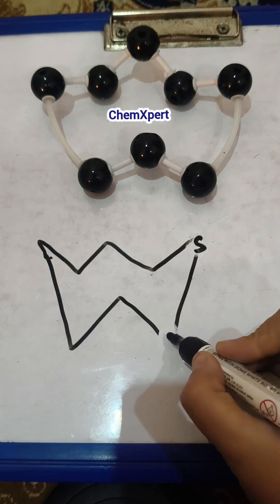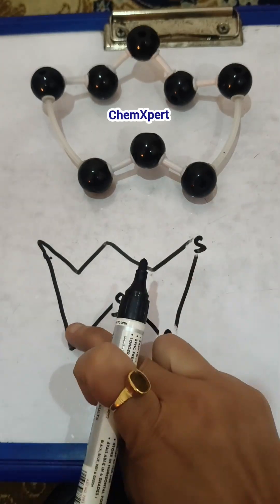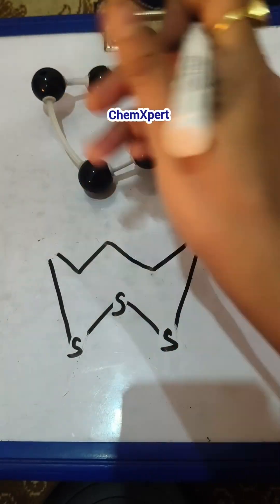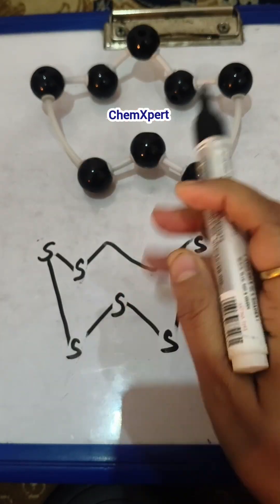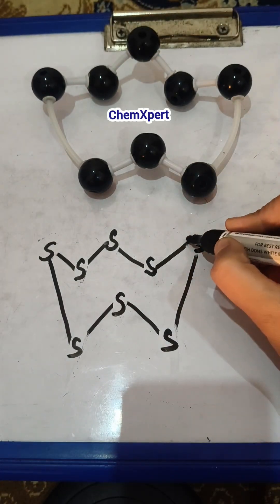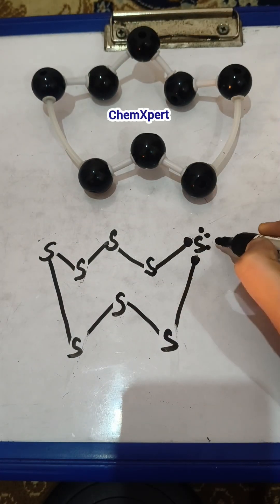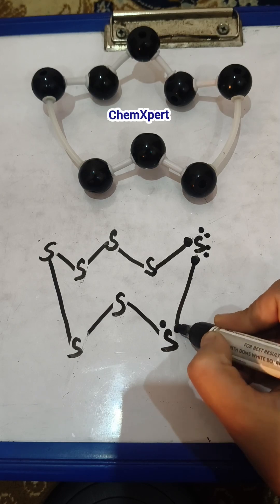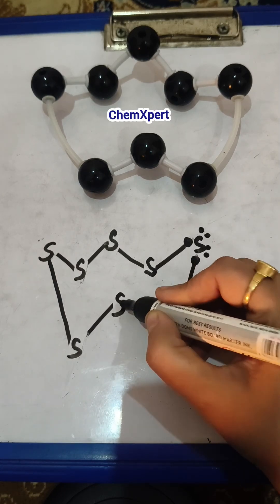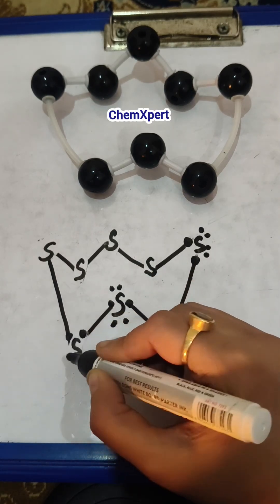The electronic configuration is 2,8,6, so on each sulfur you have to draw 6 dots. You can count 2 are making the bond and the remaining 4 are placed over the sulfur. This is the electron dot structure.